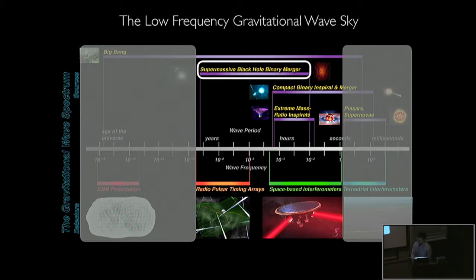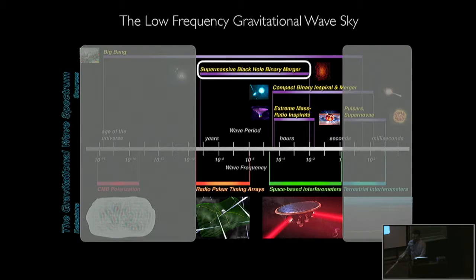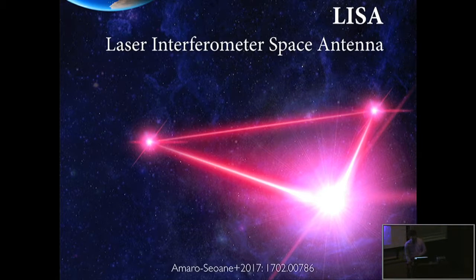I want to talk about the instruments that will detect these low-frequency gravitational waves. These are space-based interferometers—essentially LIGO put into space. In space, you can beat down low-frequency noise due to seismic and weather activities, and you can have much larger arms to get higher sensitivity at low frequencies. The main instrument planned for gravitational waves in the range of roughly one hertz down to ten-to-the-minus-five hertz—corresponding to the merger of supermassive black holes—is LISA, the Laser Interferometer Space Antenna, which has just been revived very recently.